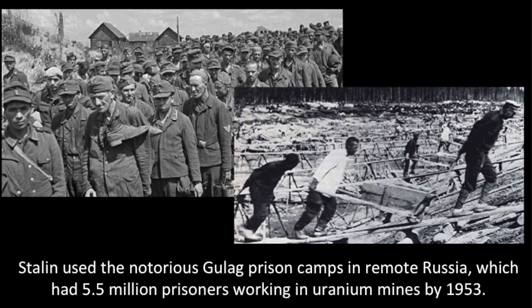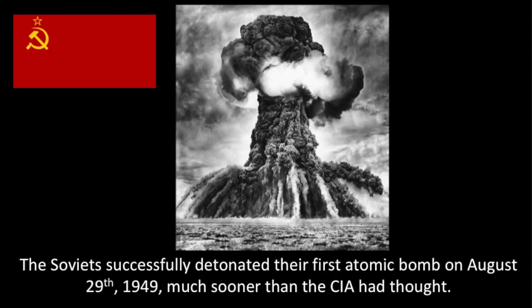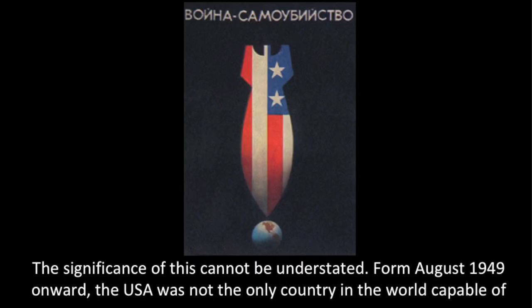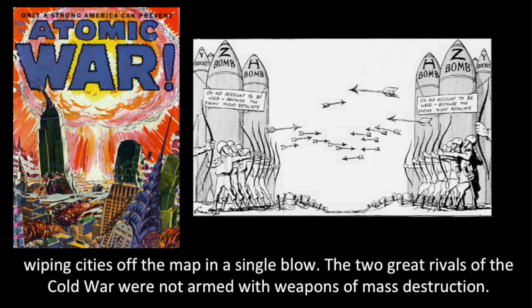Stalin used the notorious gulag prison camps in remote Russia, which had 5.5 million prisoners working in uranium mines by 1953. The Soviets successfully detonated their first atomic bomb on August 29, 1949, much sooner than the CIA had thought.